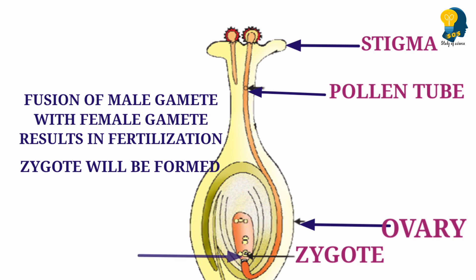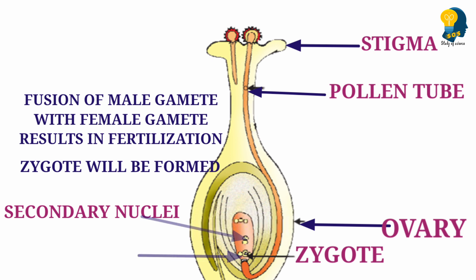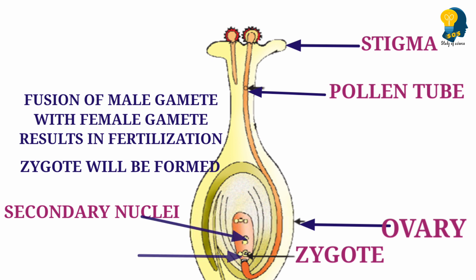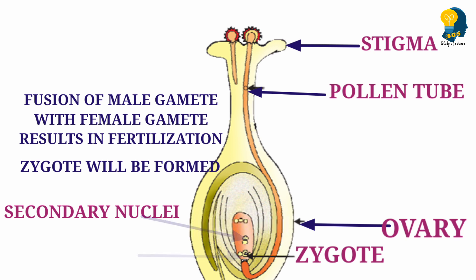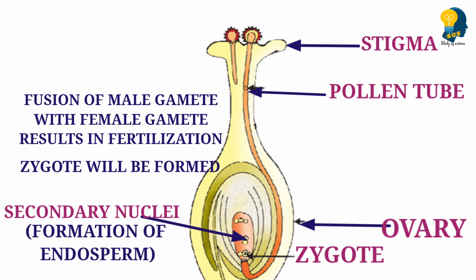One of the male gametes fuses with the female gamete to form the zygote. What about the other male gamete? The other male gamete also reaches the ovary, and it fuses with the secondary nuclei. One male gamete fuses with the female gamete to form the zygote, while the other male gamete fuses with the secondary nuclei to form the endosperm. Endosperm is the food storage for the zygote. This process is known as double fertilization.